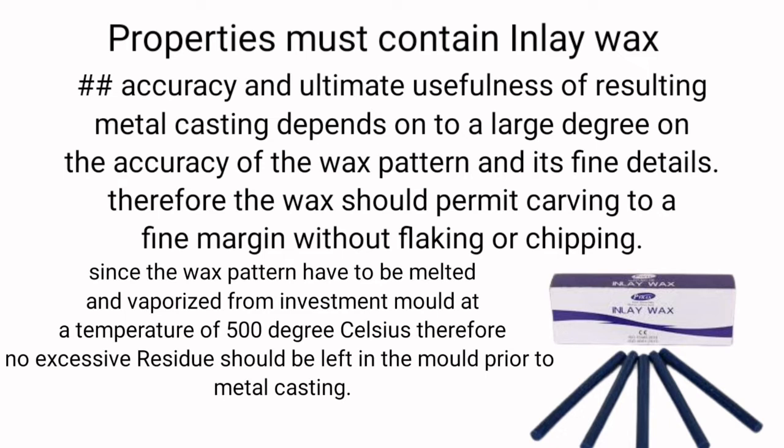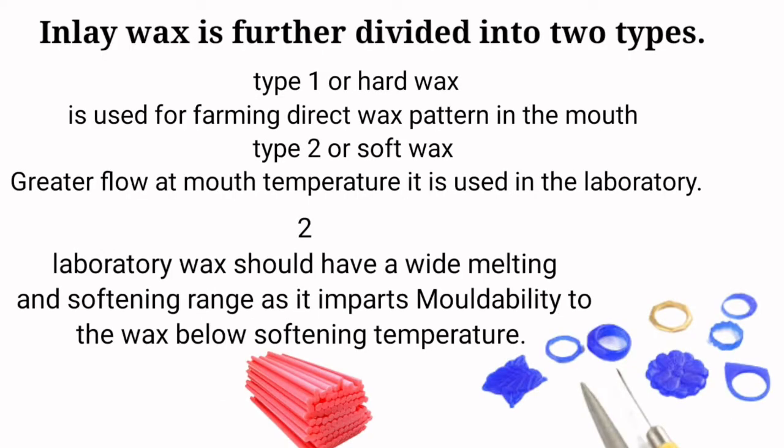Prior to metal casting, inlay wax is further divided into two types. Type 1, or hard wax, is used for forming direct wax patterns in the mouth. Type 2, or soft wax, has greater flow at mouth temperature and is used in the laboratory.